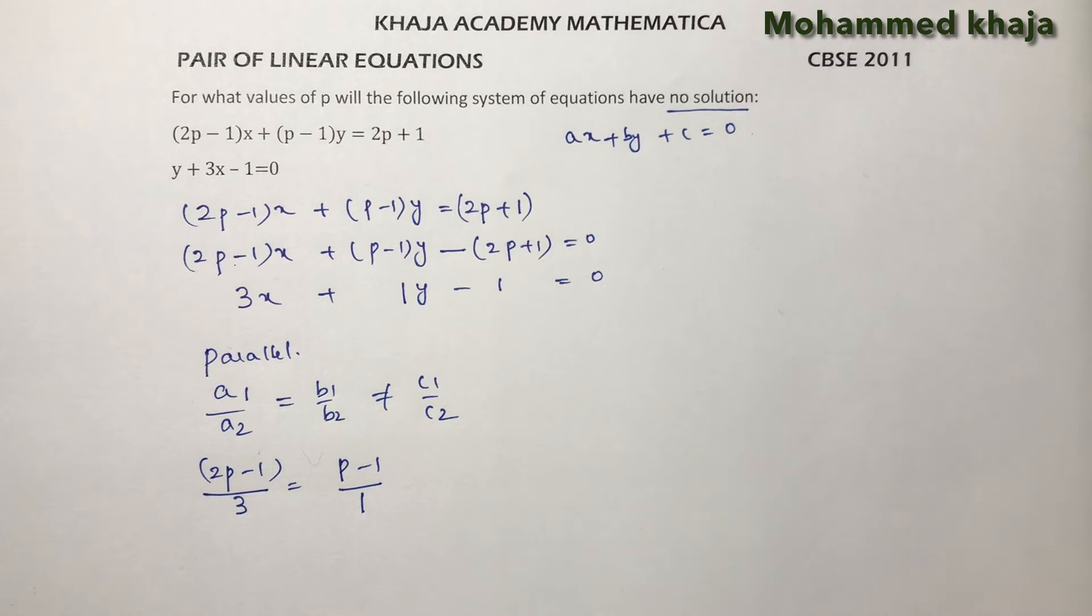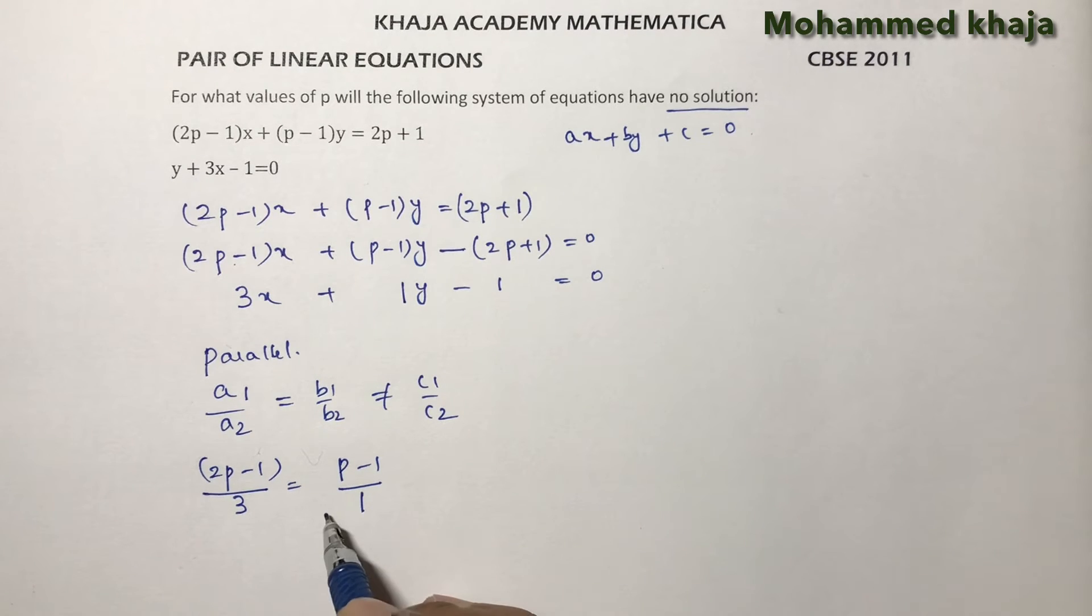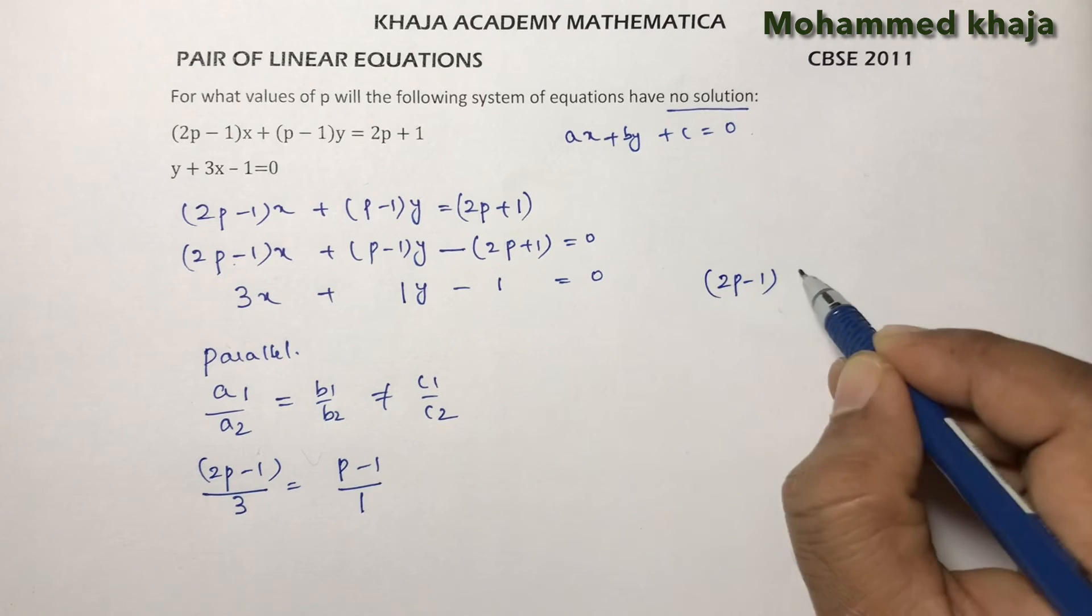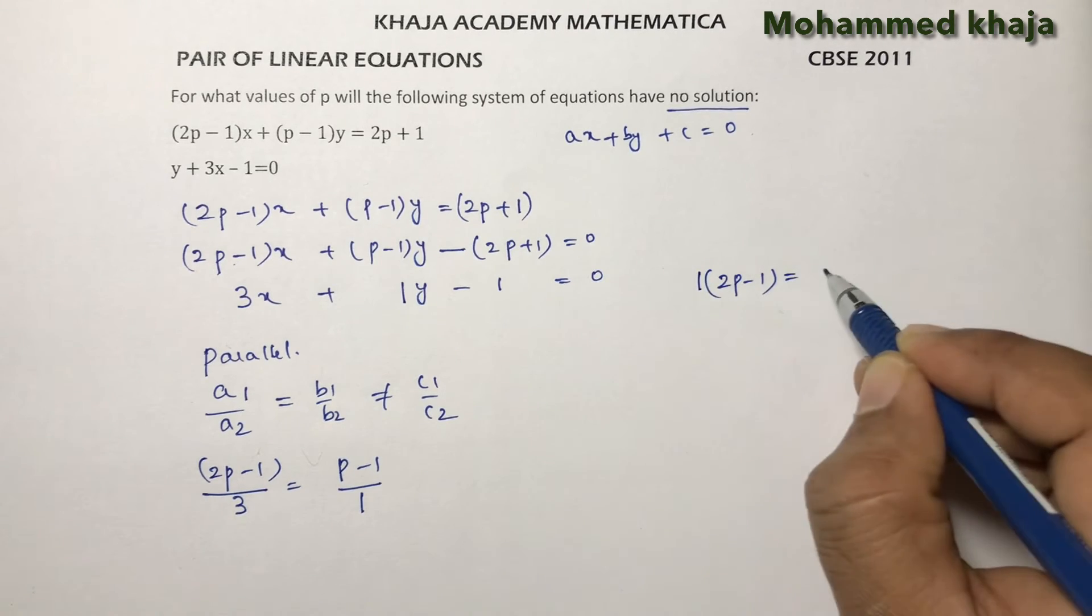Now see, if we cross multiply: (2p - 1) × 1 = (p - 1) × 3.